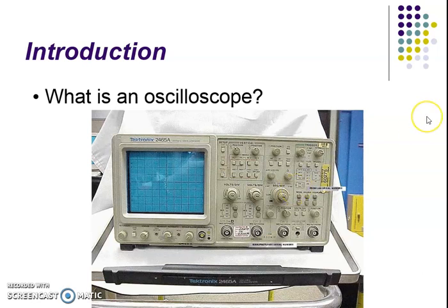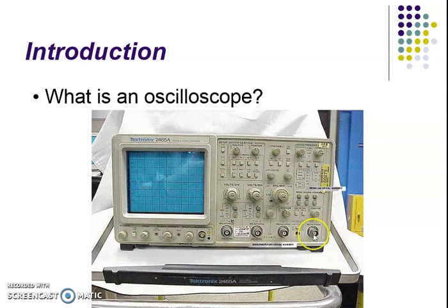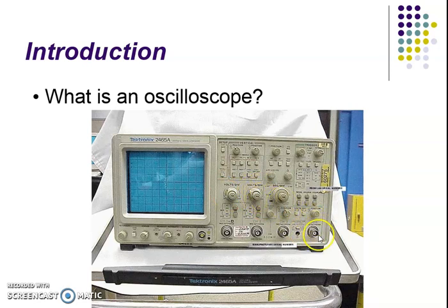This is an example of a dual trace CRO, which is very popular. A single trace CRO has only one channel, so we can connect only one input. A dual trace CRO allows two inputs at the same time — channel A and channel B, sometimes called channel X and channel Y. For channel A there is a volts-per-division control, and similarly for channel B. This is the screen of the CRO where we can see the waveform.